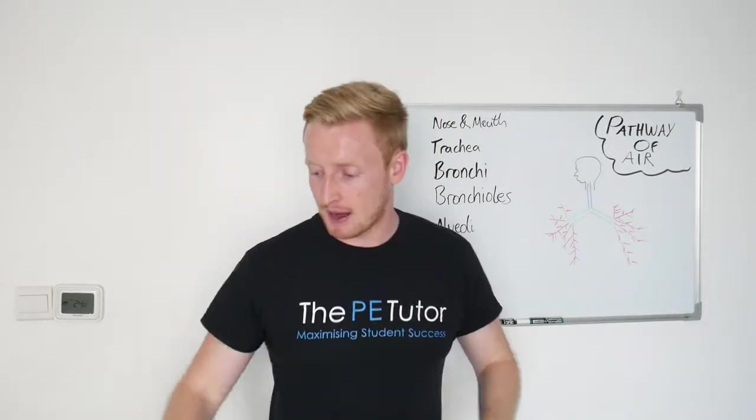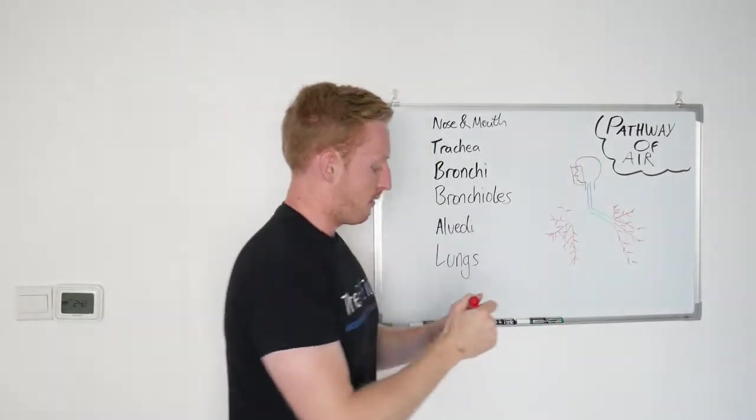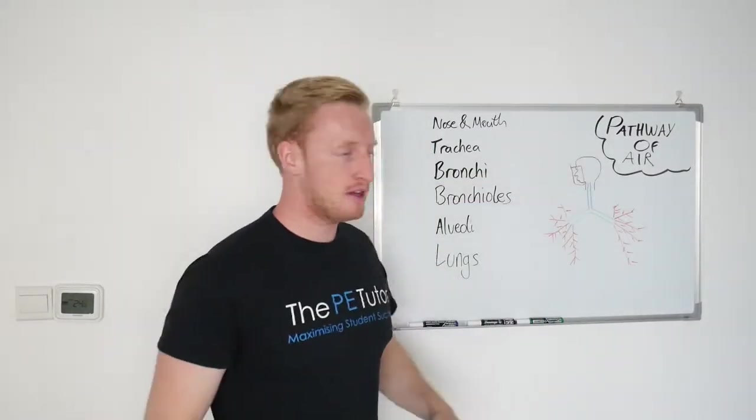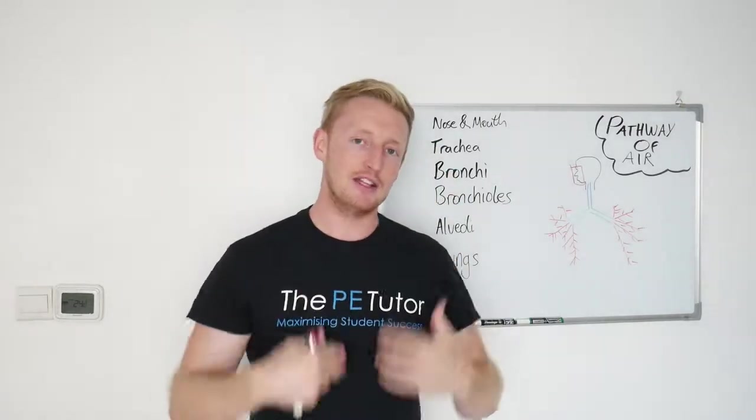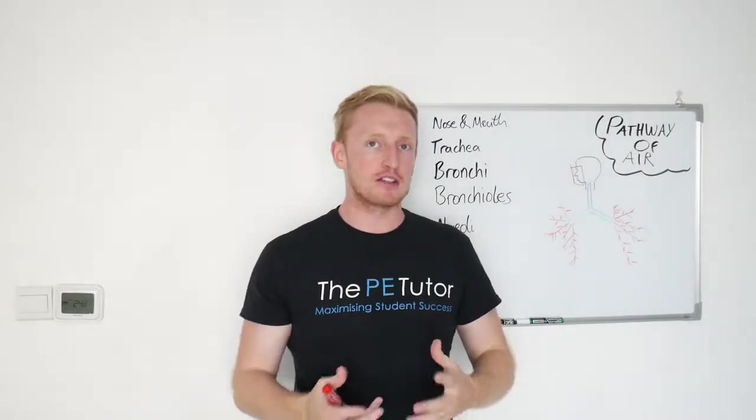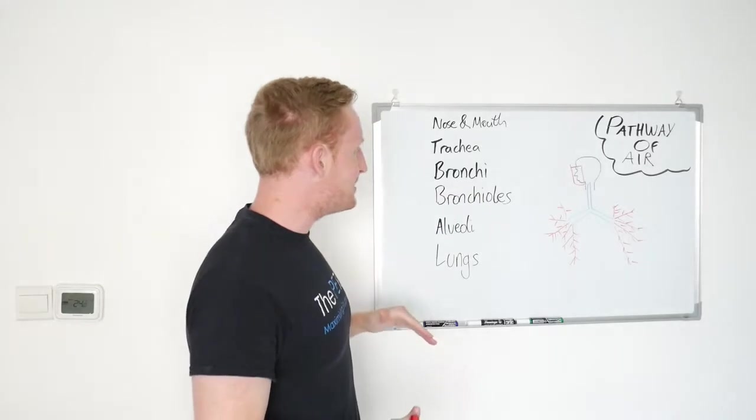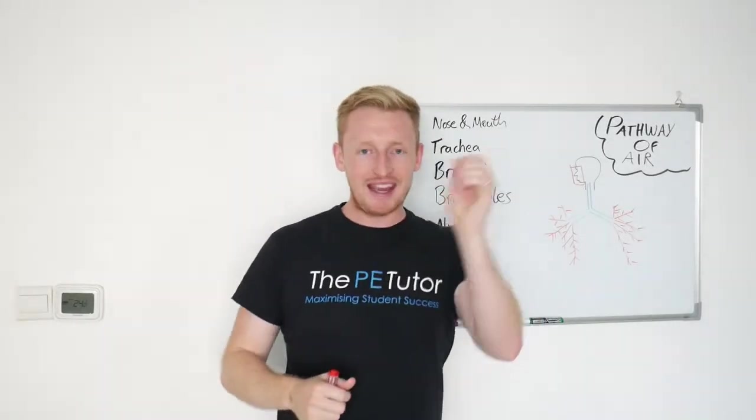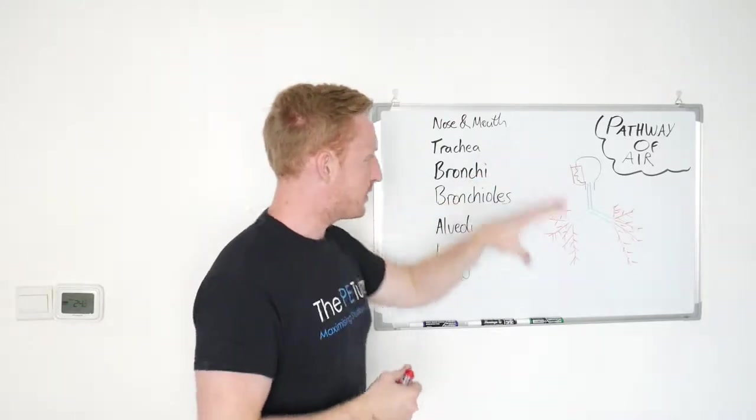To start with, we have the nose and mouth. Obviously, you'll know where the nose and mouth are on the front of our face. They're the entrance way for air to get into our body, and it's not this magical process that we just breathe and we live. We have to have all of these separate components working in order and all working by themselves for air to actually get in effectively.